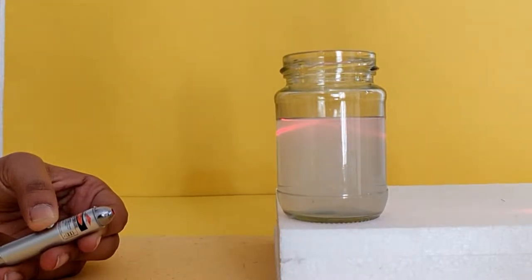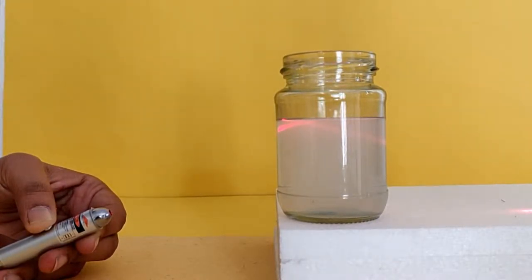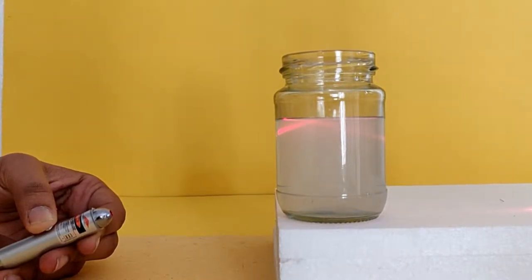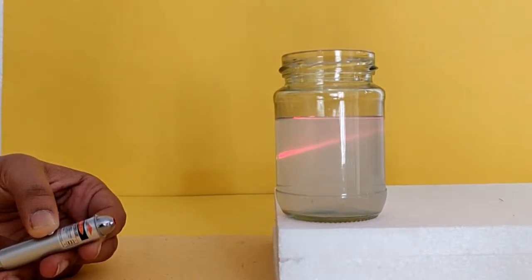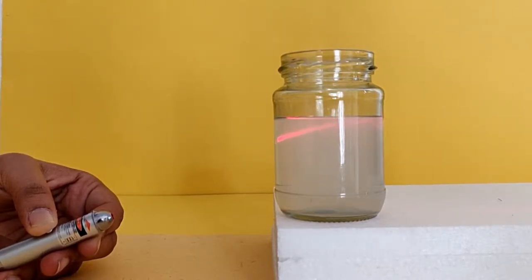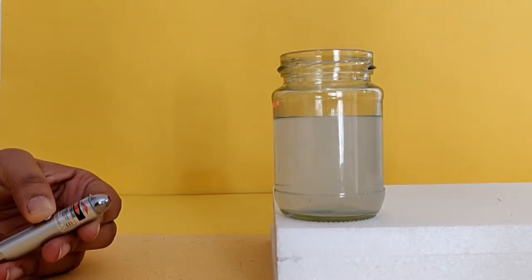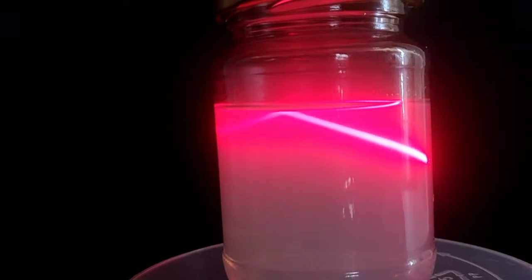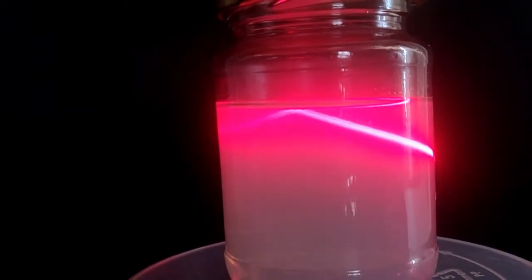Point the beam from below towards the surface of the water. Do that at various angles till you see that the beam reflects off the surface of water, traveling back into the water rather than traveling out of it. This phenomenon is called total internal reflection.